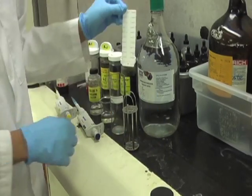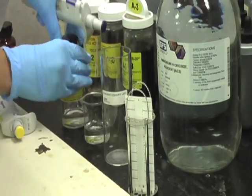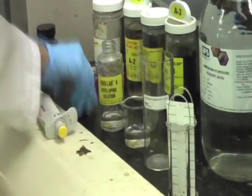Now the Toxigram is placed into its holding container. Add 3 milliliters of the developing solution to the Toxilab jar.